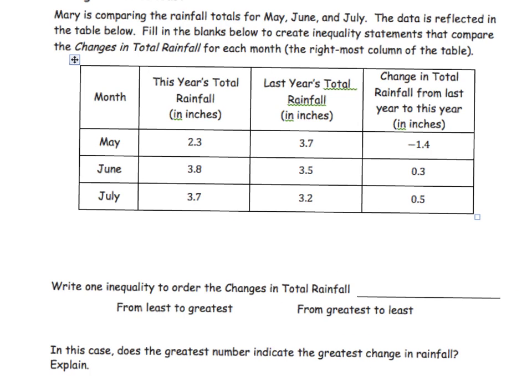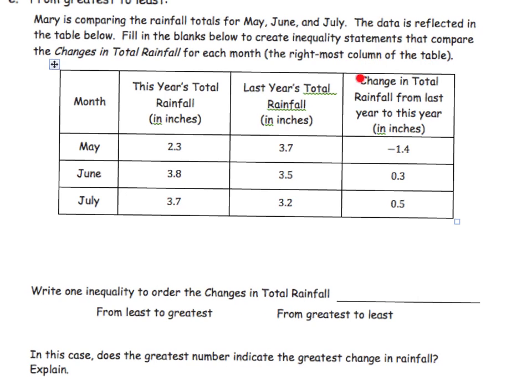Okay, so for the next question, it says we're going to be filling in answers down here, talking about the furthest to the right, the change in total rainfall. So first it says write 1 inequality to order them. So I have these three numbers. I am hoping by now that you know that a negative number compared to two positives is always going to be the least. It is further to the left, so it is going to be the least. So negative 1.5 is less than. Now to compare these, 0.3 compared to 0.5. If they're both positive, we're going to look at the numbers. 3 tenths is less than 5 tenths.